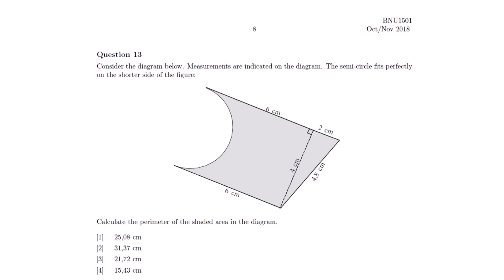I will give you the equations for the shapes we have in this diagram. We have a rectangle, a triangle, and a semicircle. Let's look at each one.